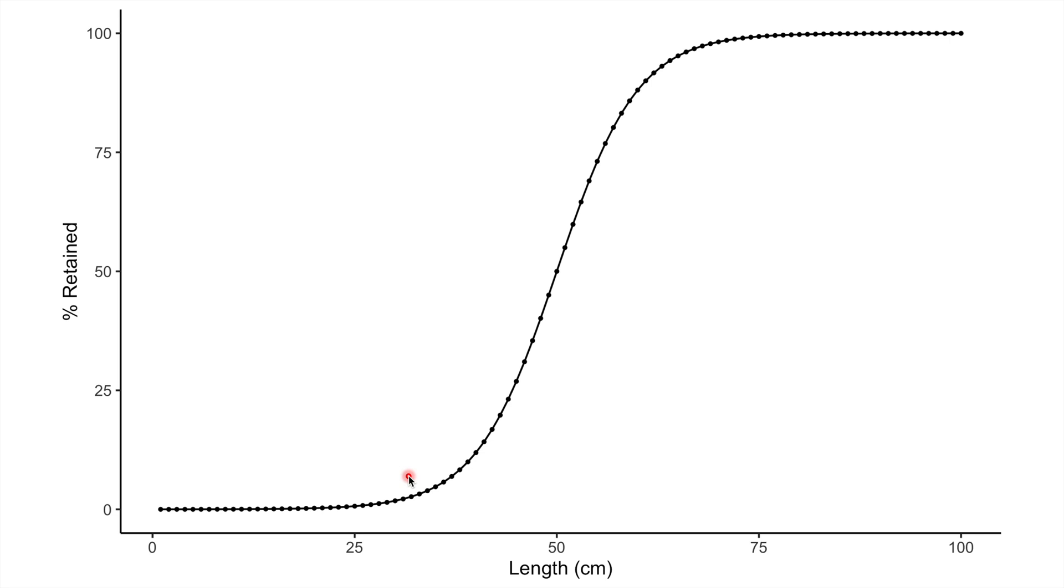Hello and welcome to Oceans Explained. This is just a short video on knife edge selection curves in fishery science. As you can see here, we've got a fairly generic cumulative sigmoidal shaped curve typical of any trawl fishery.